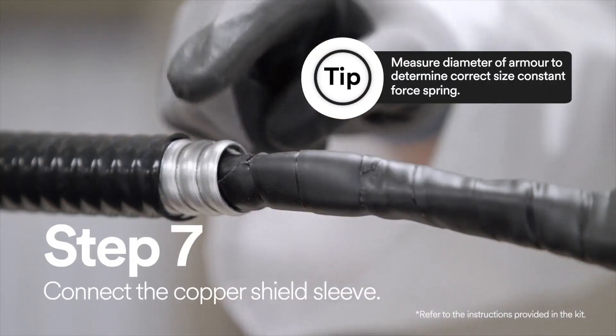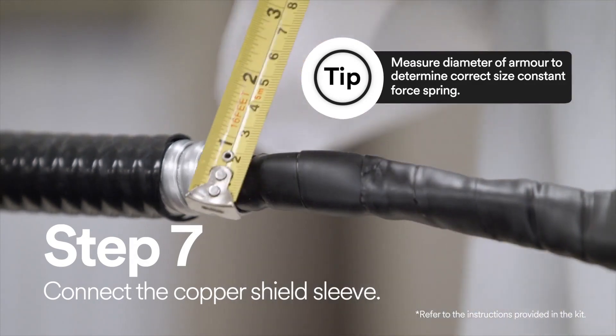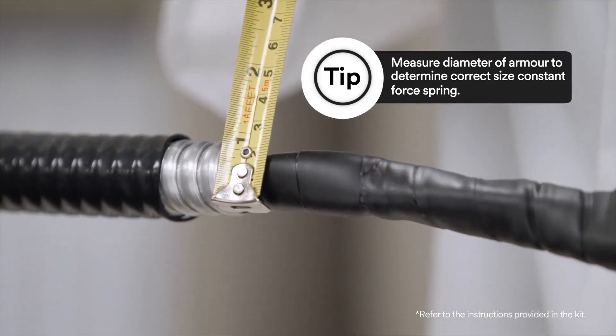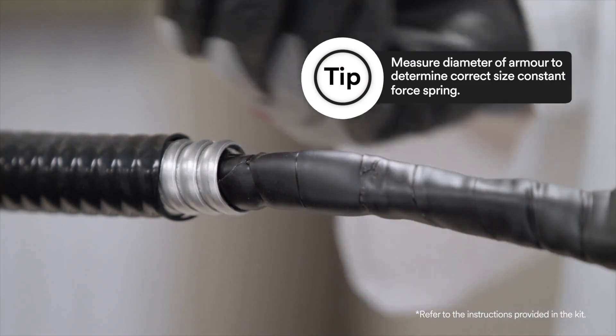Now you need to connect the copper shield sleeve. Measure the diameter of the armor and make sure that the measurement fits the range in the table.